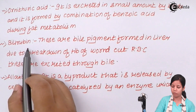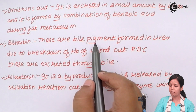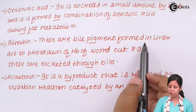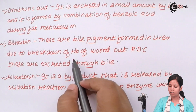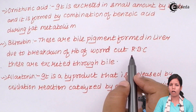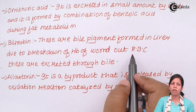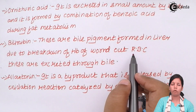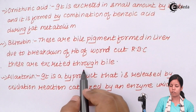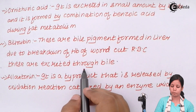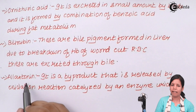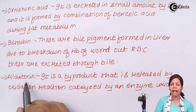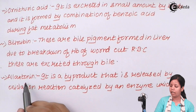Bilirubin is a waste product secreted in human beings. These are bile pigments that are formed in the liver due to the breakdown of hemoglobin from worn-out RBCs — RBCs which are no longer required and which break down after a lifespan of 120 days. They are excreted through bile.